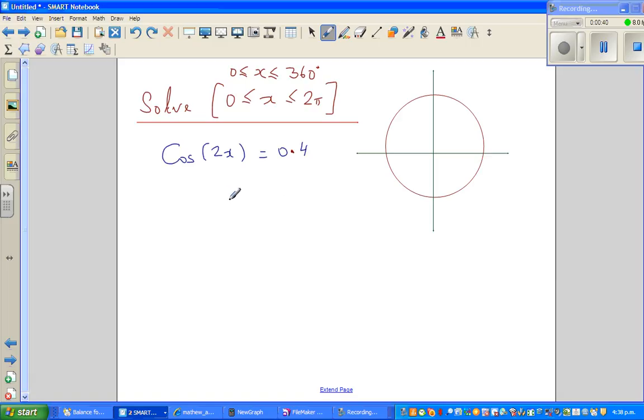Cos 2x is 0.4. The first thing we need to do is recognize that this 2 tells me the period of this would be 360 divided by 2. So the period of cos 2x is 180. This means within 360, you've got 2 cycles. So this should be kept in mind.